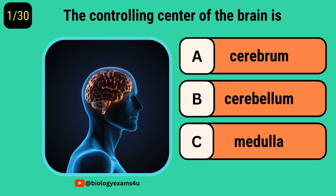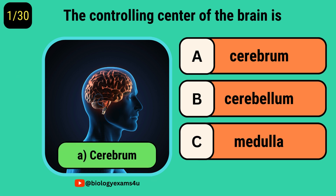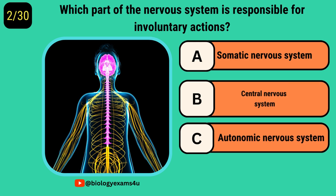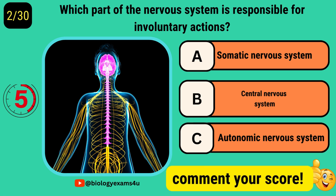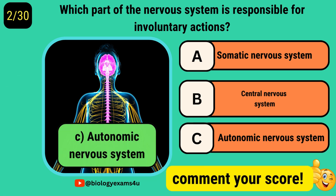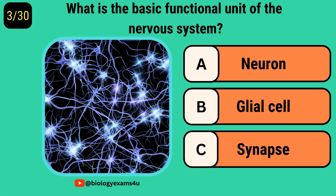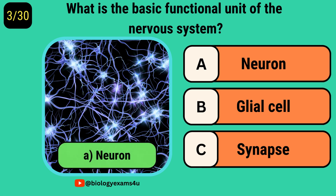The controlling center of the brain is? Answer: Cerebral. Which part of the nervous system is responsible for involuntary actions? Autonomic nervous system. What is the basic functional unit of the nervous system? Neuron.